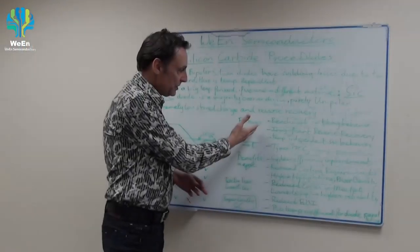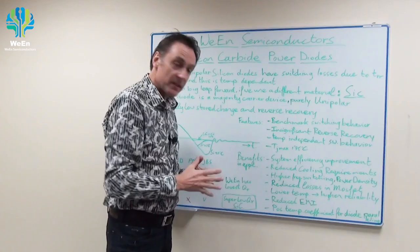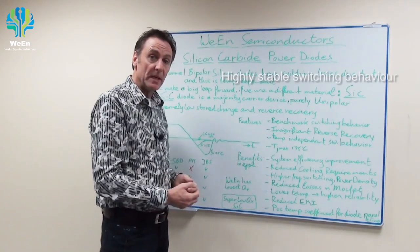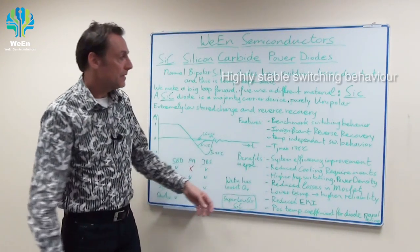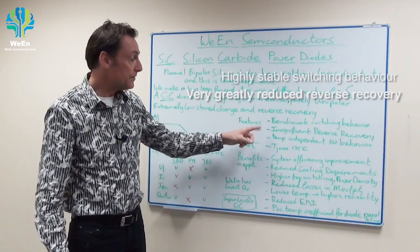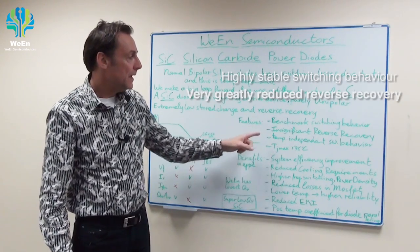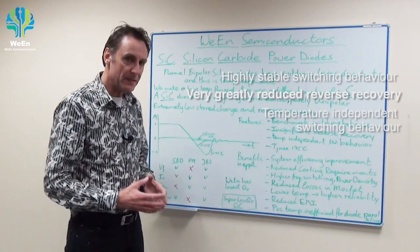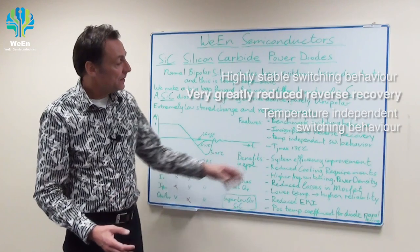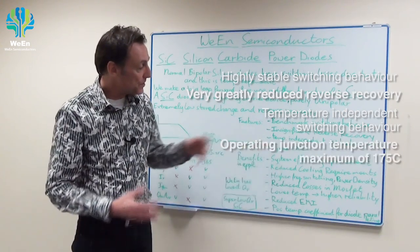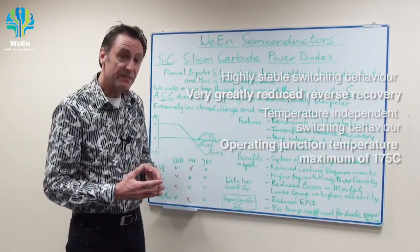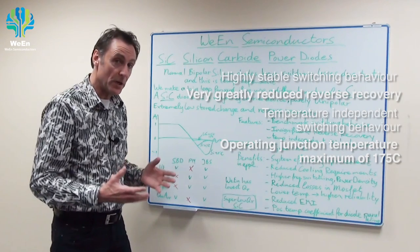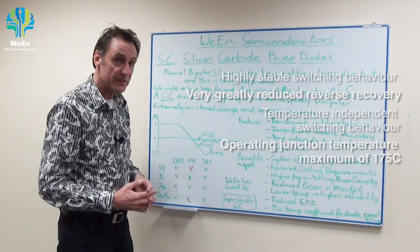The features of silicon carbide products are benchmark switching behavior, insignificant reverse recovery, and temperature independent switching behavior. Our parts are specified to a maximum junction temperature of 175 degrees Celsius.